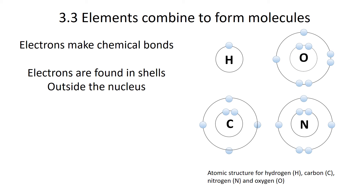The question becomes: how do elements combine to form molecules or a compound? Well, it's about the electrons. The electrons are negatively charged particles, and they are found outside the nucleus in what's called a shell. On your right I've got four of the most abundant elements found in living organisms: hydrogen, carbon, nitrogen, and oxygen. Whenever we talk about the atomic structure, you've got protons and neutrons in the nucleus, and then outside the nucleus in those shells are the electrons.